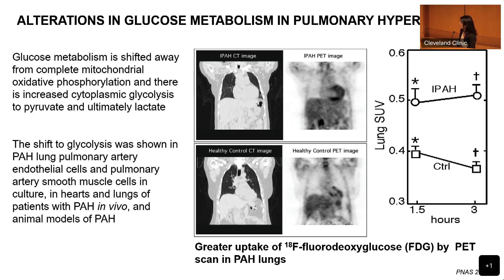This is a study from our group from 2007 looking at FDG PET uptake in PAH lungs. This is the test used clinically to look at cancer and metastasis, and we wanted to see if PAH lungs would show higher FDG uptake. We found that at an hour and a half after infusion of FDG, and even at three hours, there's higher uptake in PAH compared to controls. Unexpectedly, we also found a change in RV uptake in PH patients compared to controls.